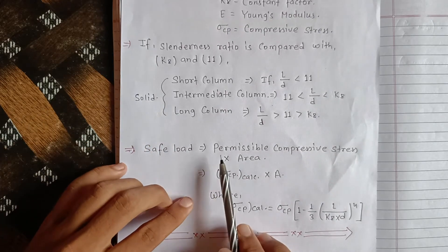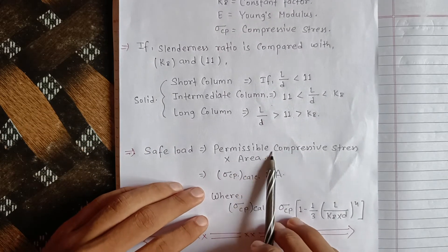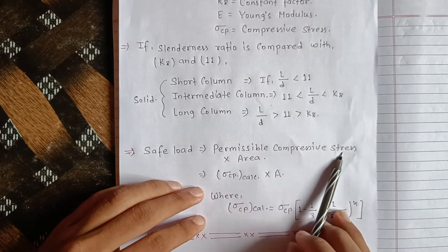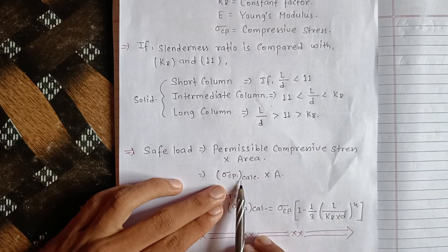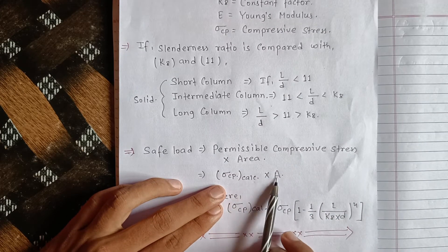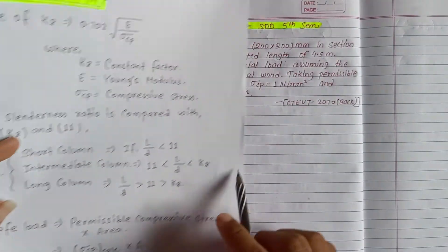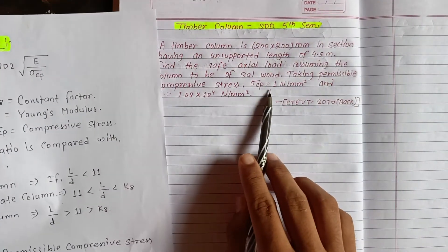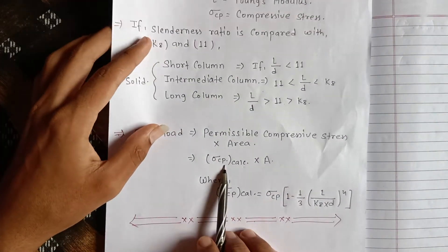The safe load formula is: Safe Load = permissible compressive stress × area. That is, σcp calculated × area.